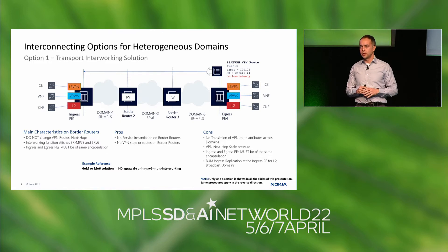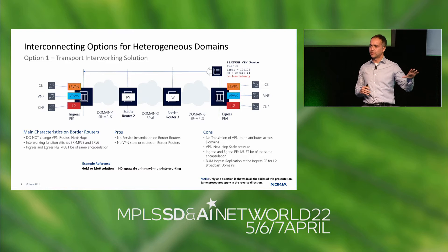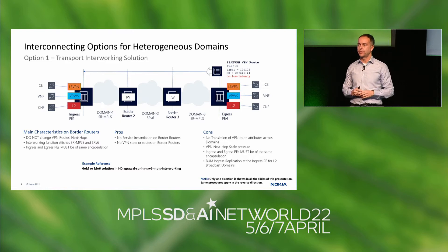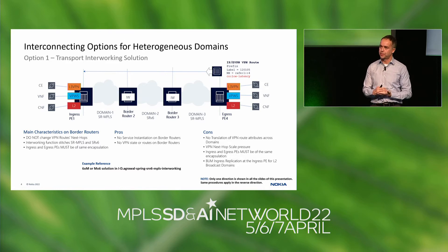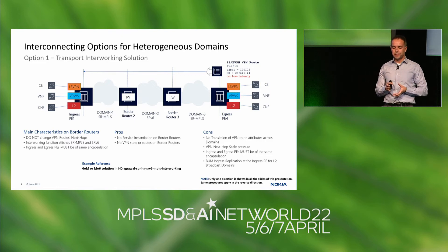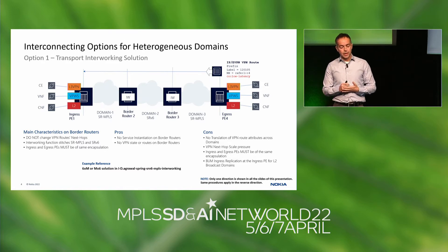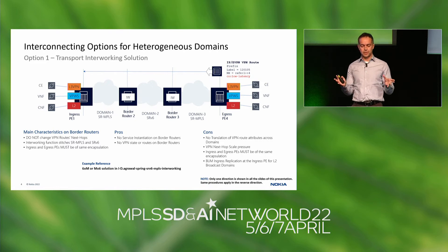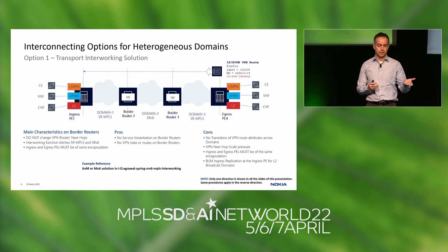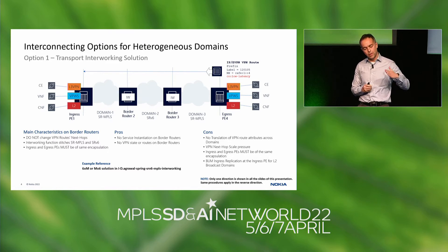For example, in domain one you may use route target A for customer X, and the same route target in domain three for a different customer. If you want to extend either customer, you need route target translation capabilities. Also, this solution creates VPN next hop scale pressure on the ingress PE, which needs to learn all remote next hops in domain three. Ingress and egress PEs must be the same encapsulation. And for EVPN layer two broadcast domains, BUM ingress replication at PE1 is not efficient — you replicate at the very ingress even though all traffic goes through border router two.